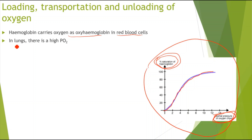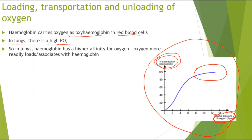In the lungs, there is a high partial pressure of oxygen. Looking at the highest point on the graph, this is where the lungs are — the high partial pressure region. Because the partial pressure is really high, hemoglobin has a higher affinity for oxygen. Affinity means the attraction of hemoglobin towards oxygen. So at a high partial pressure, more oxygen can be loaded or associated with hemoglobin — this loading occurs in the lungs.